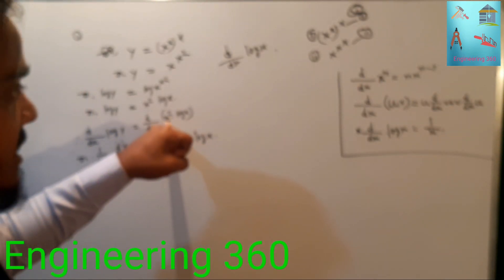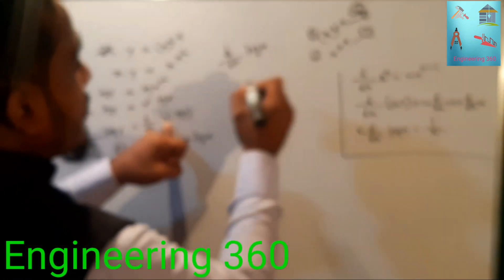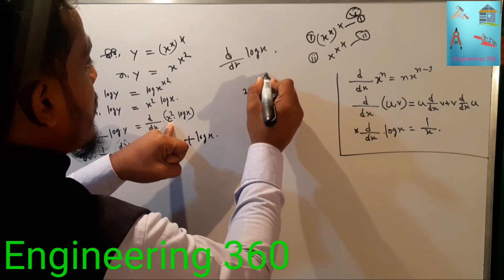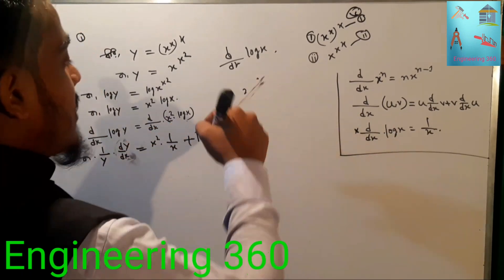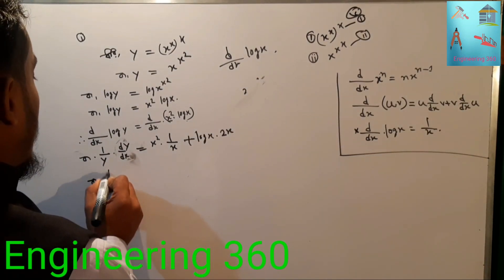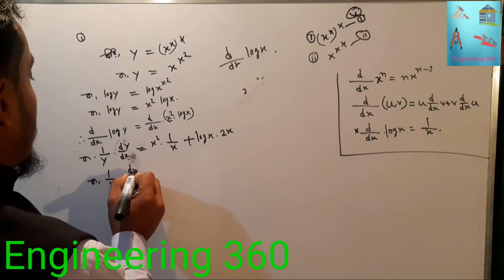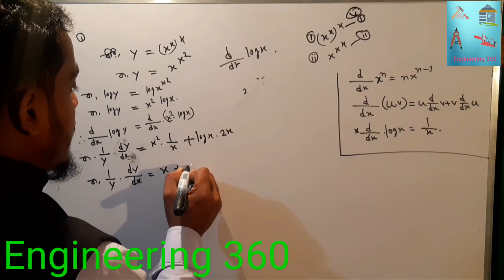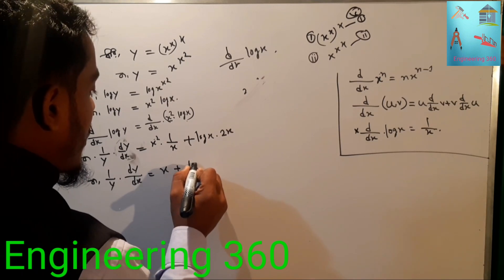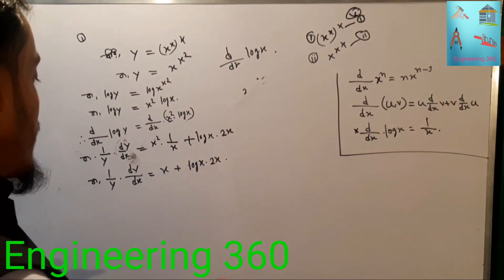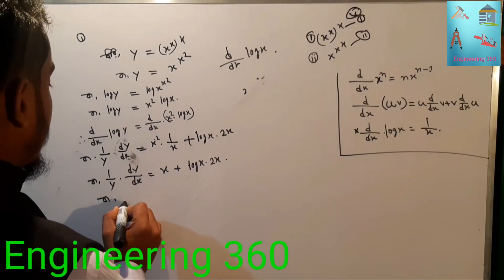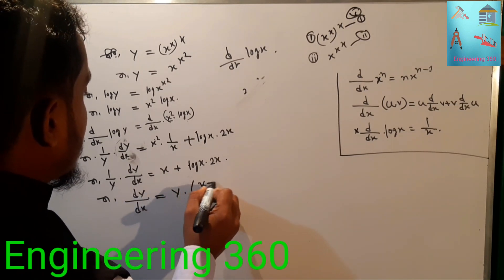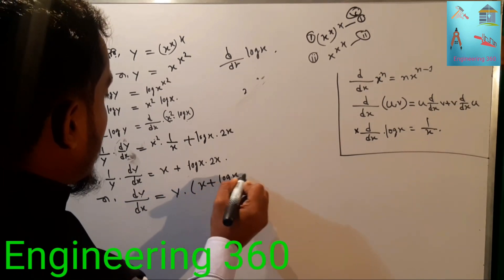So we get: 1 by y times dy/dx equals x squared times 1 by x plus log x times 2x. This simplifies to x plus 2x log x. Therefore dy/dx equals y times (x plus 2x log x).